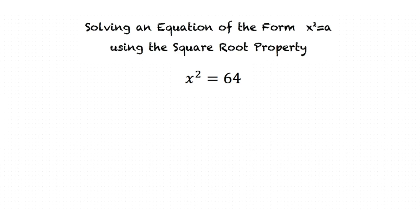To isolate a single x by itself we can take the square root of both sides. Now we are left with x is equal to the square root of 64. The square root property tells us that when 64 is positive we must have a positive and negative solution. The square root of 64 is 8 so we get that x is equal to 8.